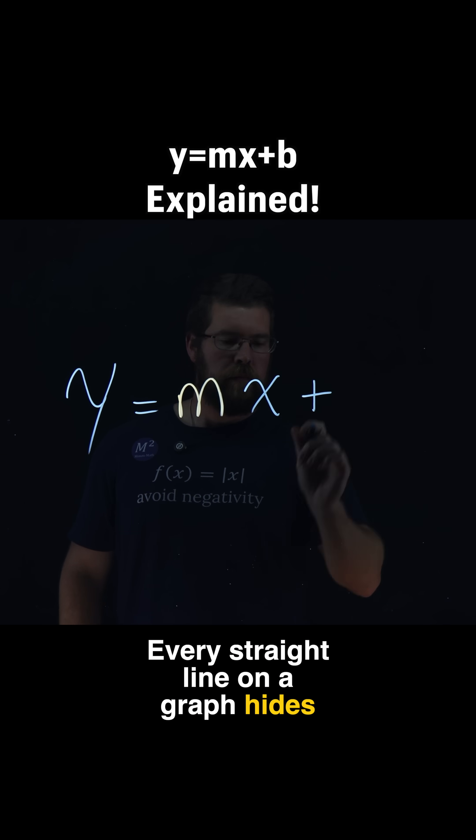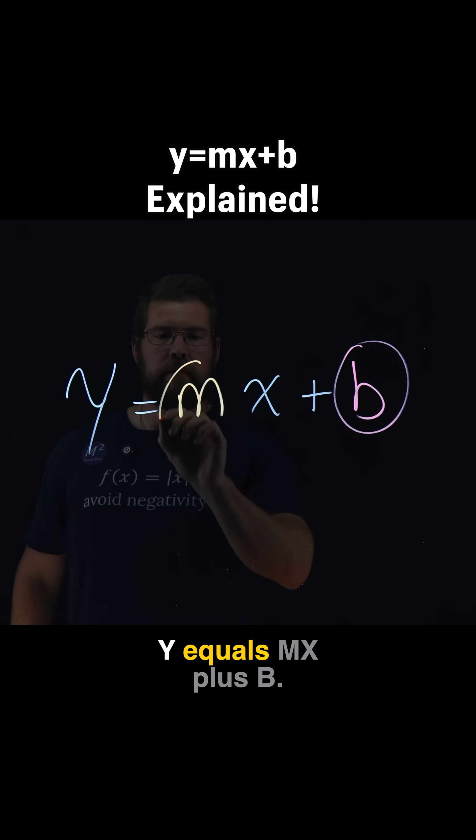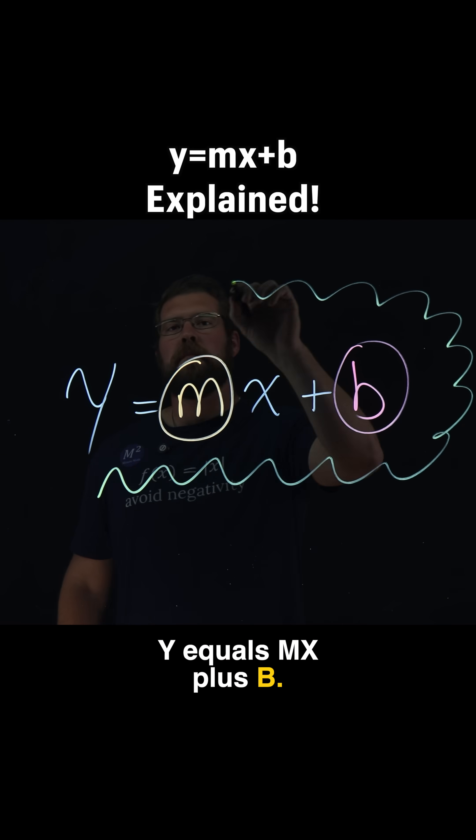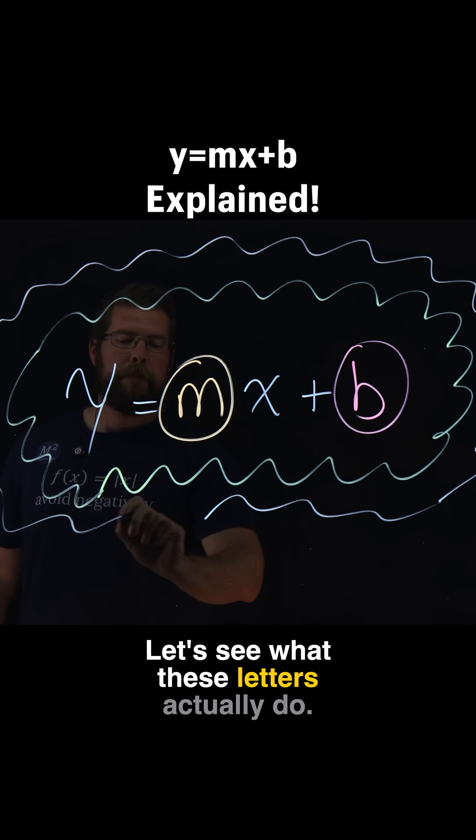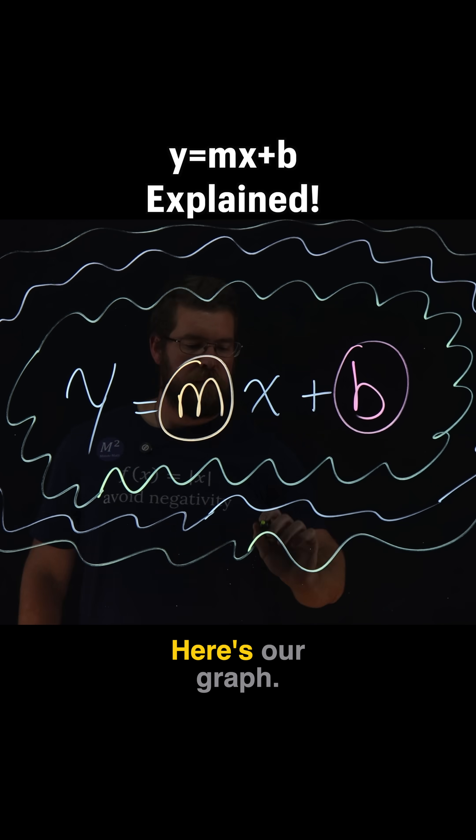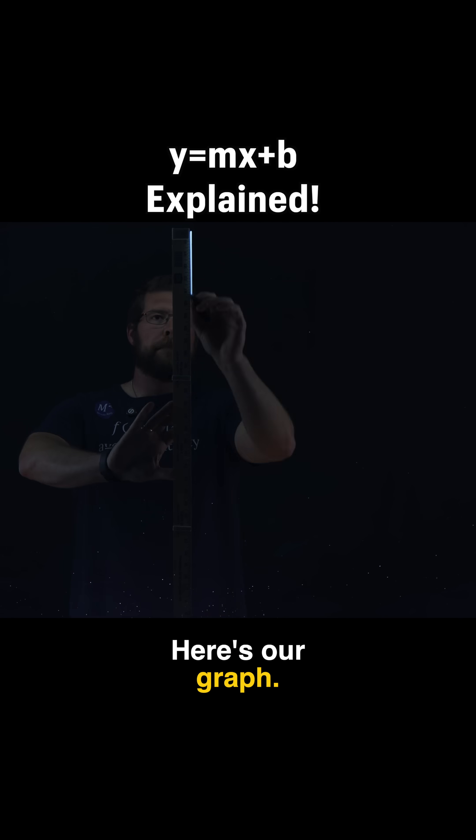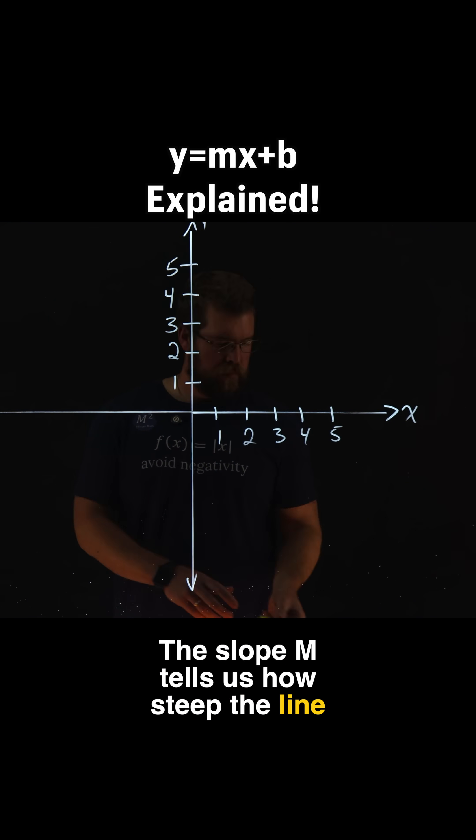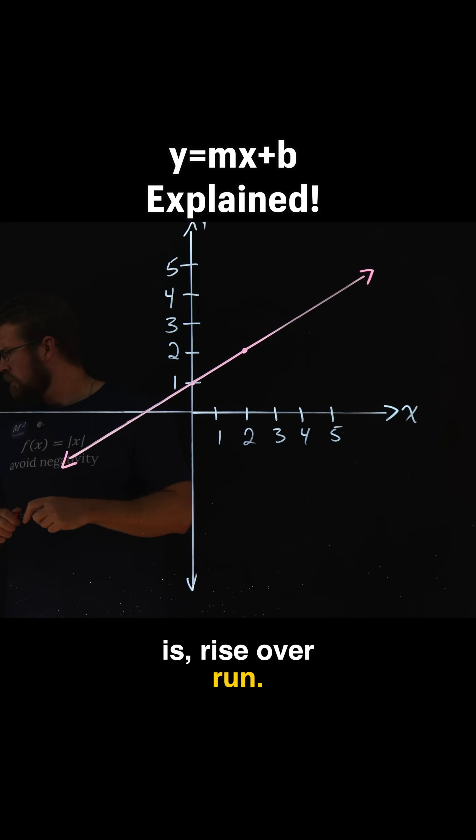Every straight line on a graph hides this simple equation, y equals mx plus b. Let's see what these letters actually do. Here's our graph. The slope m tells us how steep the line is, rise over run.